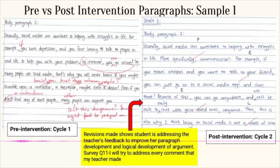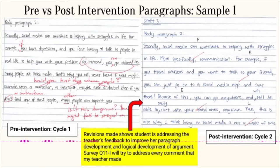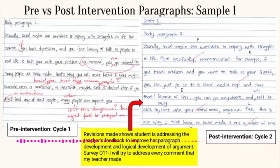The next slide shows another student where the teacher on the left gave very specific feedback — not telling her what's wrong, but rather prompting her to rethink how she might develop the paragraph in terms of logic. In the yellow box there is a survey question: 'I will try to address every comment that my teacher made.' From the survey questions we can see that students are engaging with the feedback, which is why we see evidence of improvement.